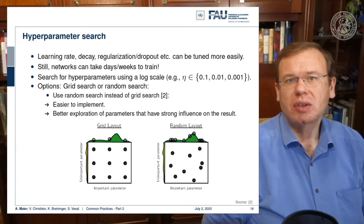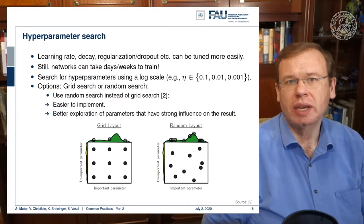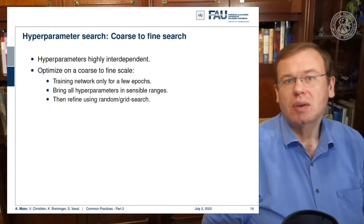You may want to consider a grid search or random search. In a grid search, you would have equal distance steps, and if you look at reference 2, they have shown that a random search has advantages over the grid search. First of all, it's easier to implement, and second, it has better exploration of the parameters, and this may have a strong influence.